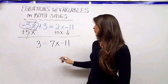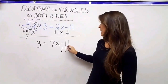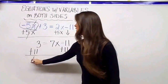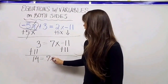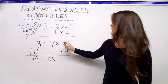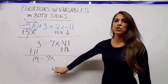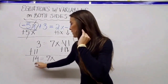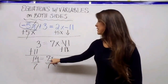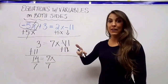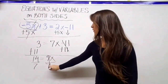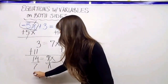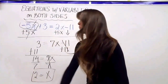I get rid of the negative 11 by adding 11 on both sides: 3 plus 11 is 14, and negative 11 plus 11 is 0, leaving 7x. One step away from isolating x — I divide both sides by 7 because 7 and x are being multiplied, so the inverse is division. 14 divided by 7 is 2, so my solution is x equals 2.